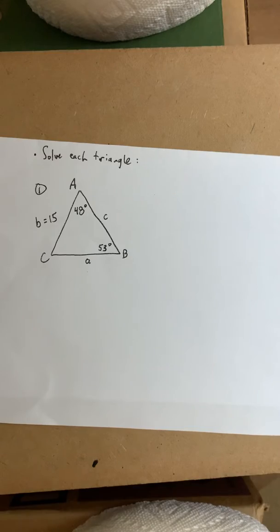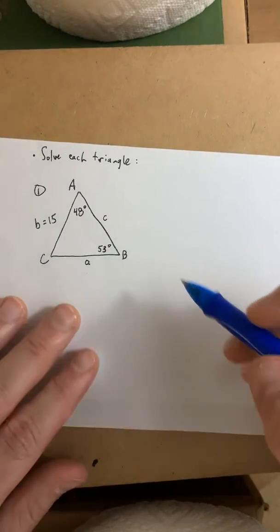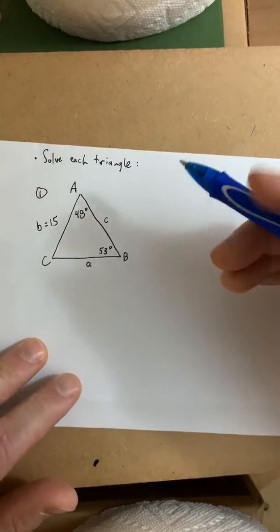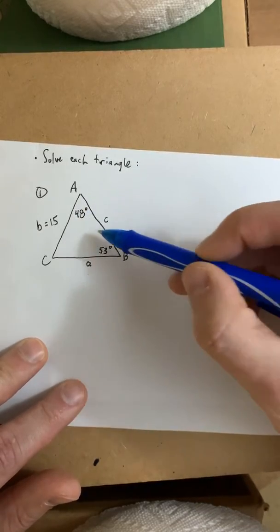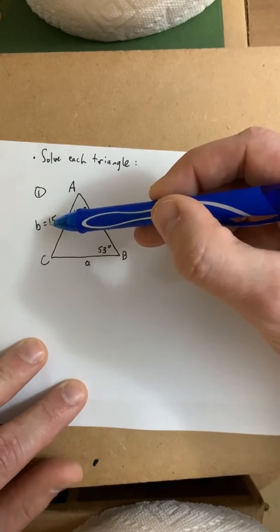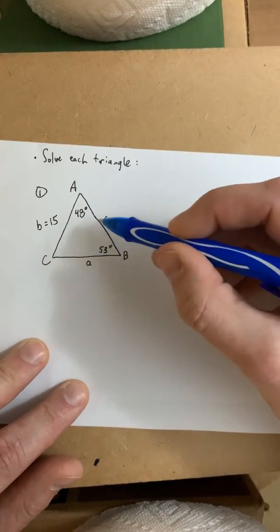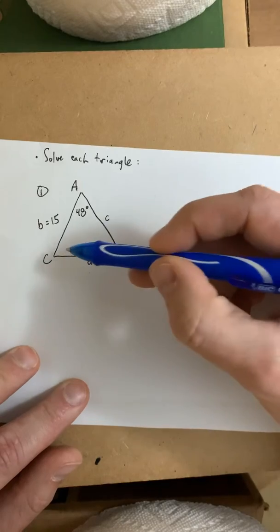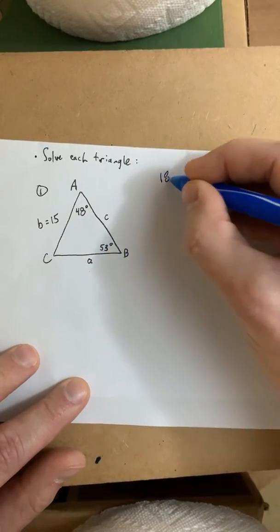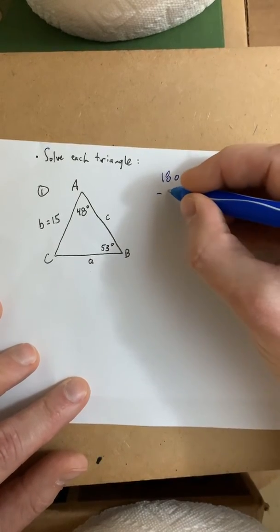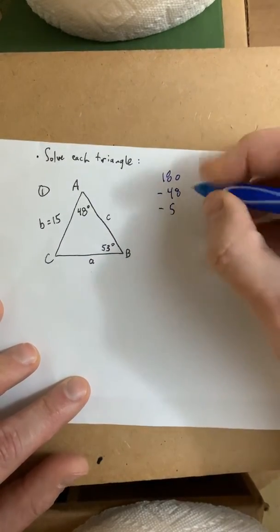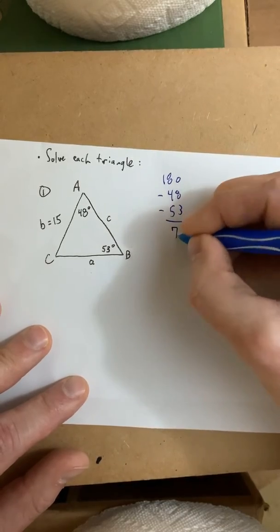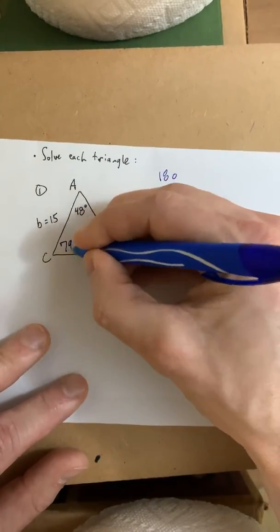In example one, the directions say to solve each triangle. We've talked about that before. What that means is to find every missing side and angle. Like we said at the top of the notes, you're going to be given two angles and you'll be given one side. So, we're going to solve for the third angle and other two missing sides. Now, the third angle is very easy to find. You know all three angles add up to 180. So, simply subtract 48 and 53 from the sum of the angles in a triangle, 180. And that will leave you 79 degrees, which is angle C.